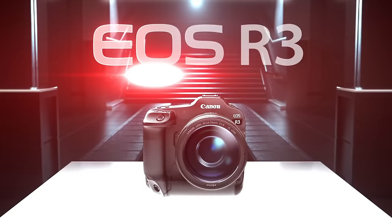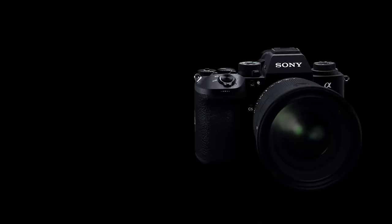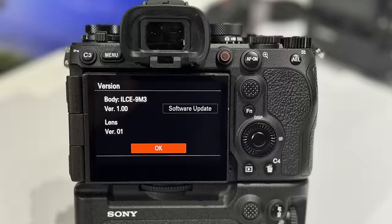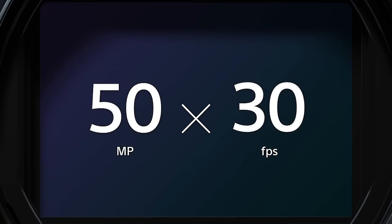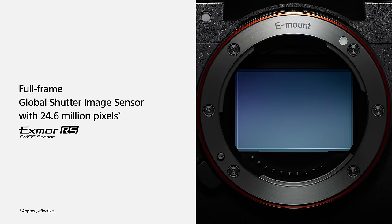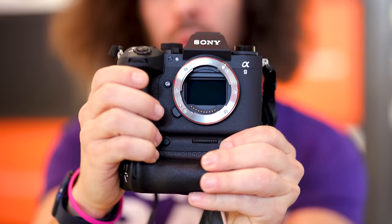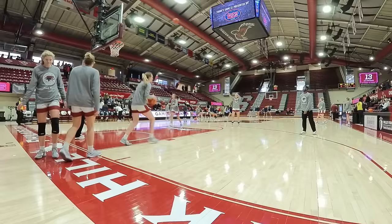Jared Polin, FroKnowsPhoto.com, and this is a real-world raw file review between the Canon R3, the Sony A93 with firmware 1.0 — which is production firmware — and just for fun, I put the A1 out there as well to get raw files from that, because there's been a lot of people wondering who have A1s how it compares to the A93.